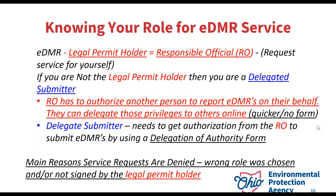If you're a delegate submitter, you need authorization from the RO. If you don't know who the RO is but need the service for yourself, you can request it on your own account. When you do, a form will download that has to be signed by the RO and sent back to us before you can be approved. The RO can also grant instant access or you can submit the delegation form — both ways get you access, but one is a lot quicker and more efficient than the other.